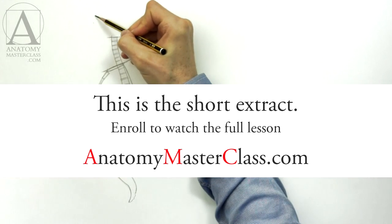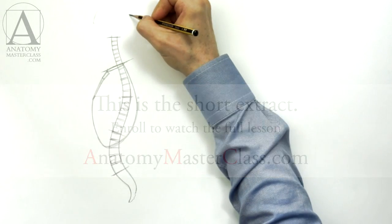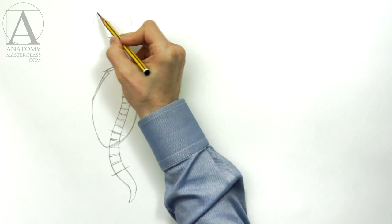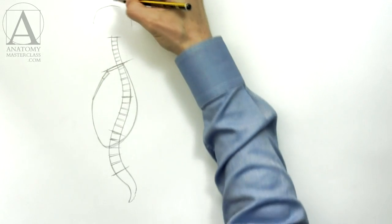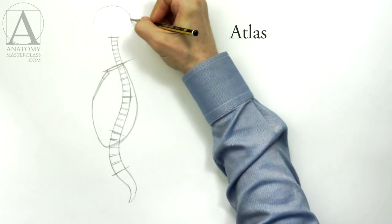I will draw a quick outline of the skull here. The human skull connects to the body via the first vertebra at the top of the spine. This vertebra is called the atlas.